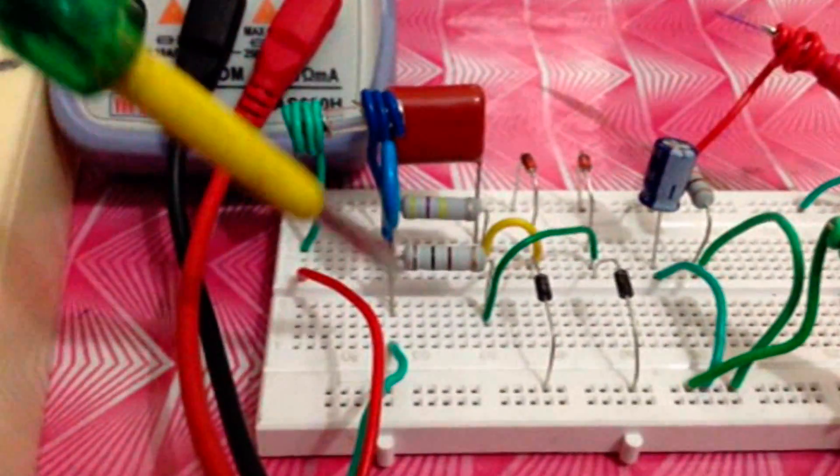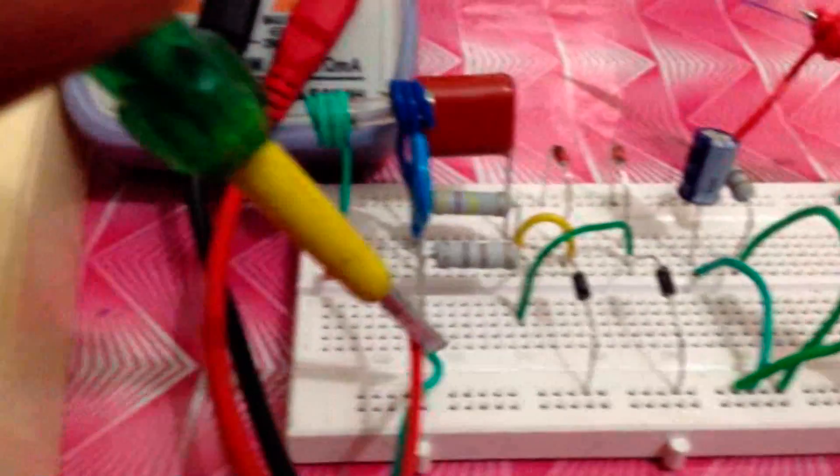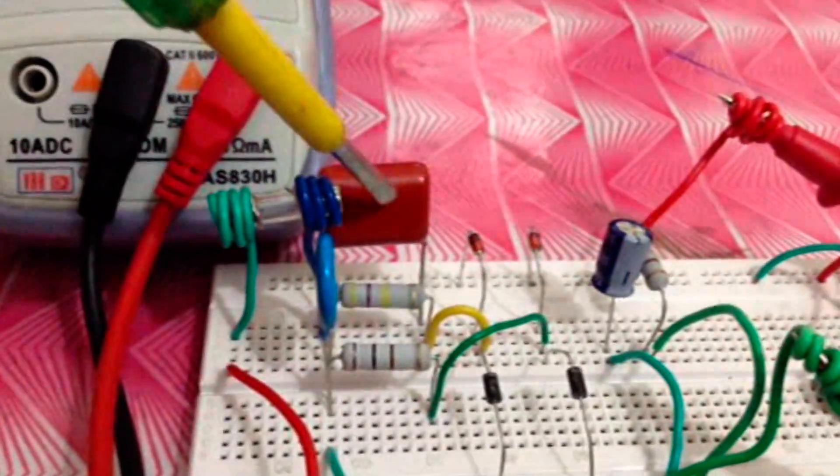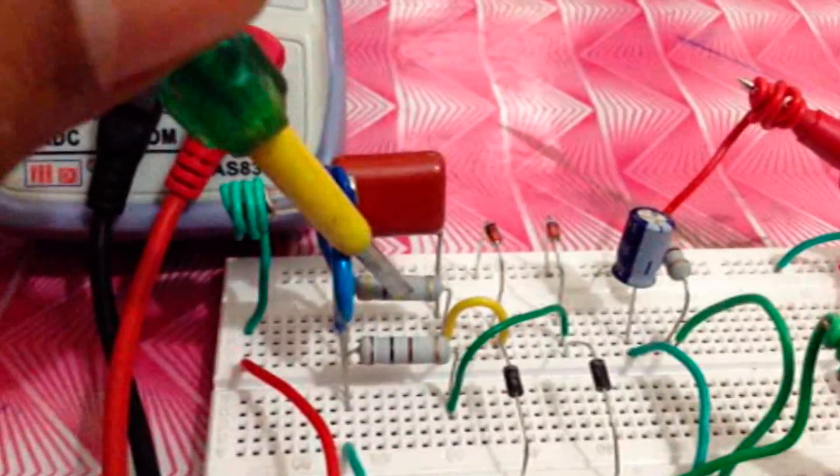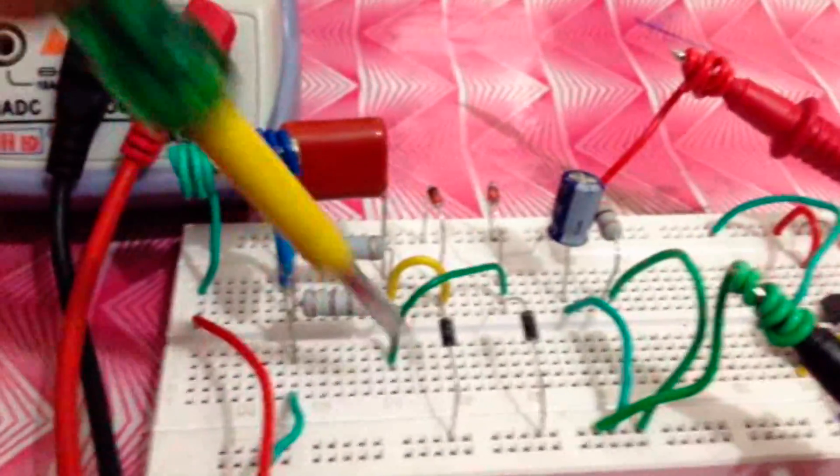This is the AC input to the supply. Neutral is connected to the resistor and phase is connected to the fuse. It is the 200 milliampere fuse to protect the circuit. This is the X-rated capacitor for dropping excess AC voltage. This is the bleeder resistor, and this resistor is to limit initial high current.